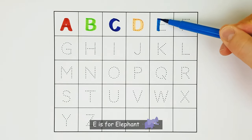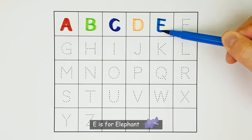E. E is for Elephant. E. F. F is for Flamingo. F.